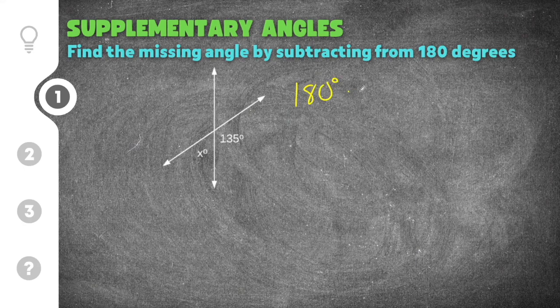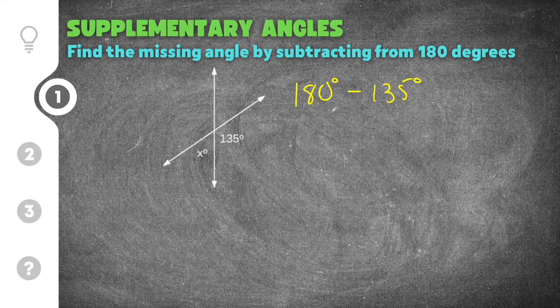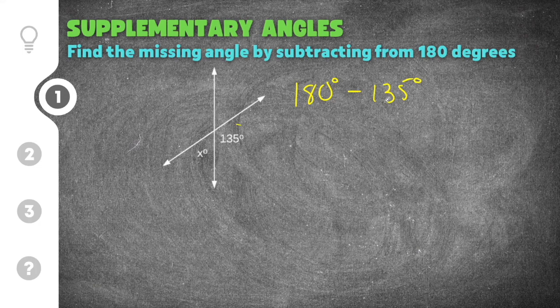Now in order to find this angle you're going to take 180 degrees and you're going to subtract it by the angle that you know. So we know 135 degrees. Now after you subtract that measure is going to be your missing angle.